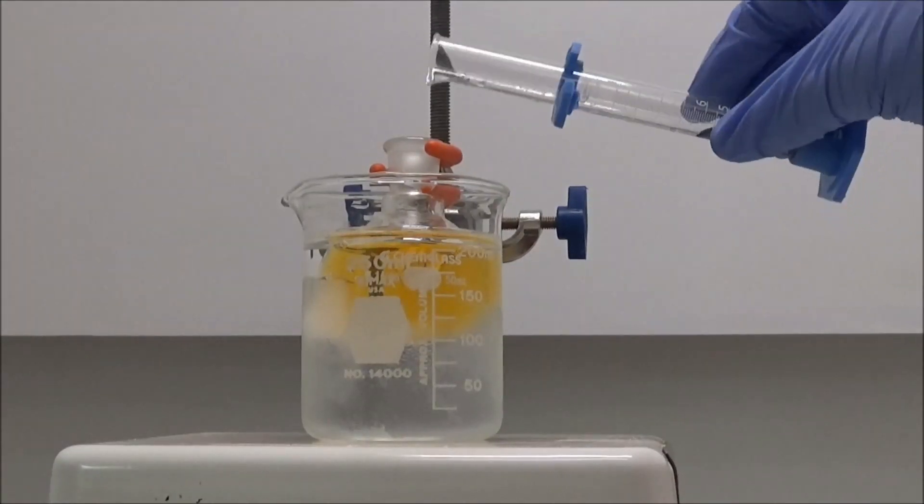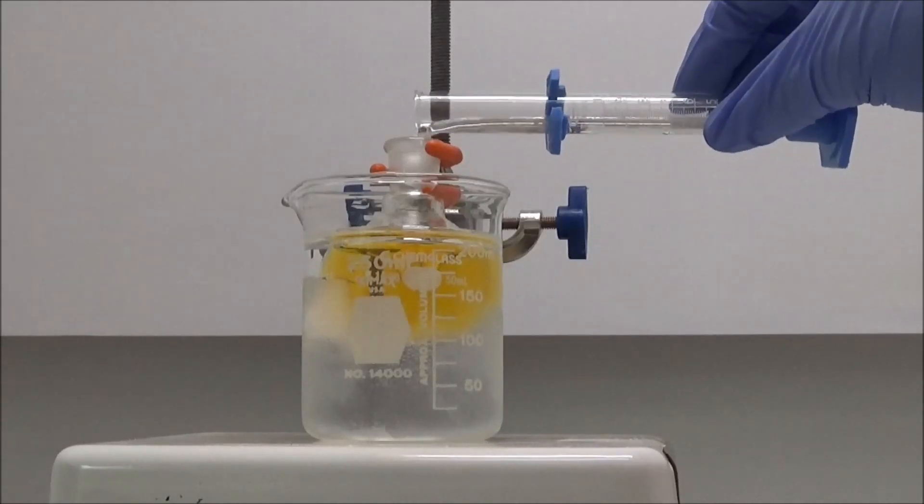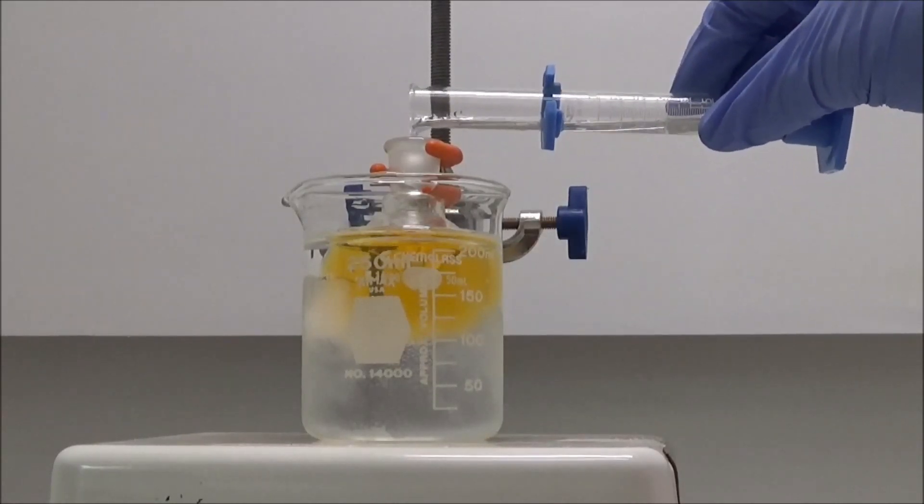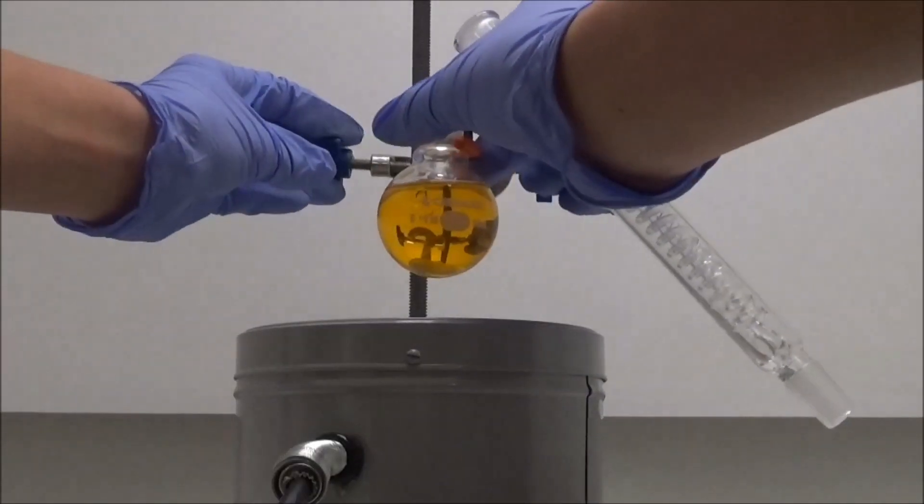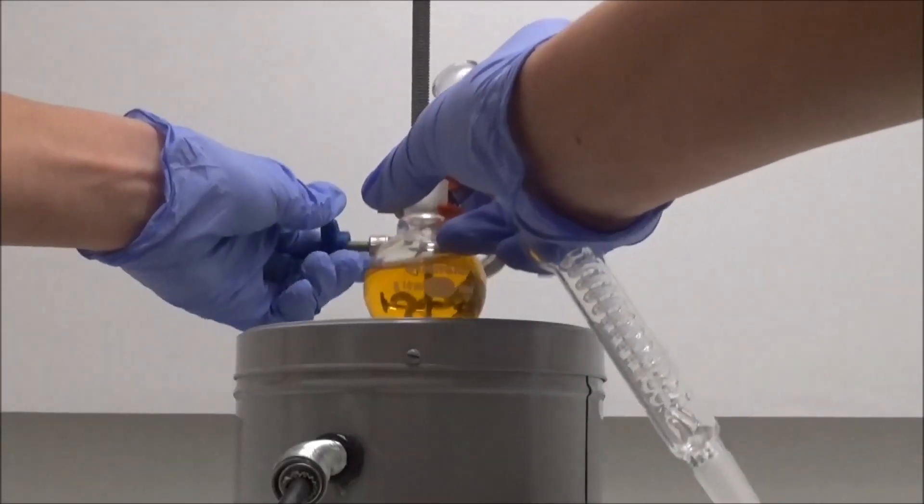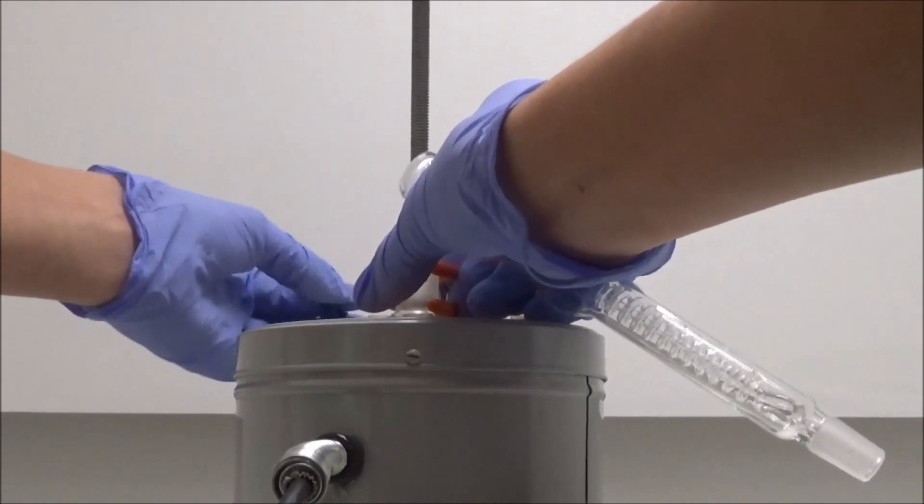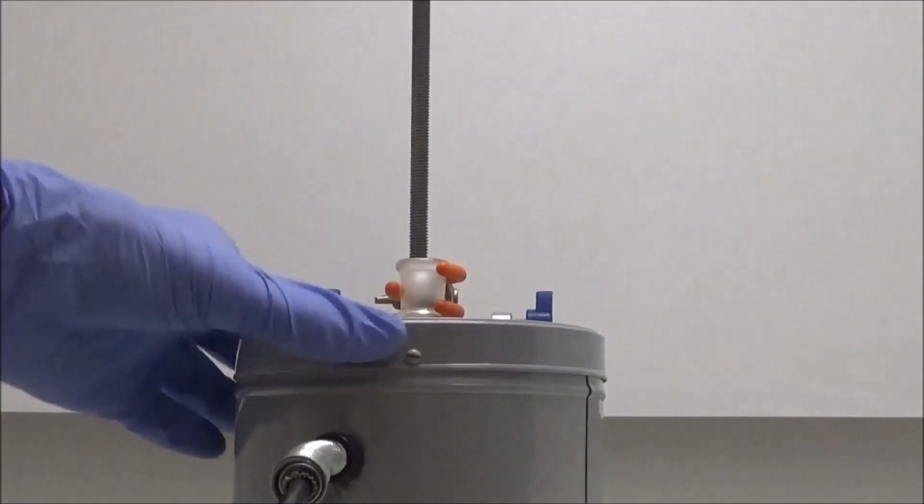Finally, I added 3.3 milliliters of concentrated sulfuric acid. The flask was lowered into my oversized heating mantle, and a condenser was placed on top. This is preparing for the reflux that will take place next.